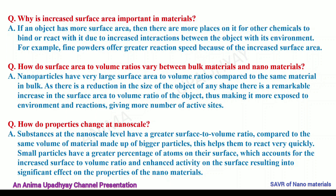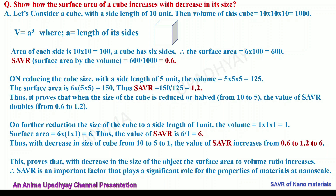Can you show with various shapes how SAVR increases with reduction of object size? Yes, let us try with various shapes. Let us take the example of a cube. The volume of a cube is given by a³, where a is the length of its sides or edges. Considering a side length of 10 units, the volume is 1000. The area of each side is 10² = 100, and since a cube has 6 sides, the surface area is 6 × 100 = 600. The SAVR is therefore 600/1000 = 0.6.